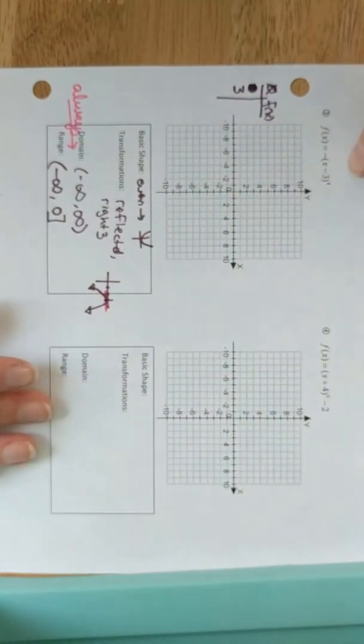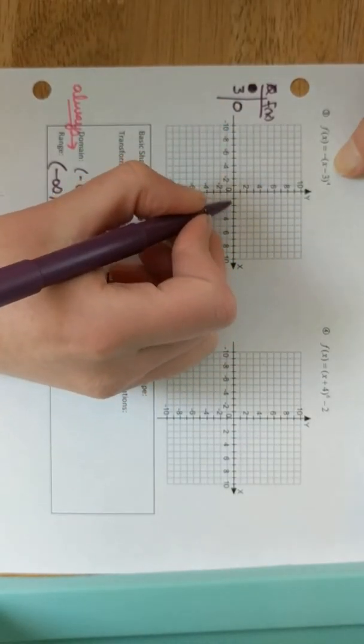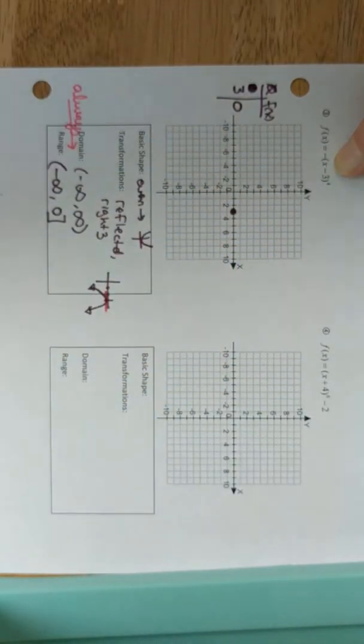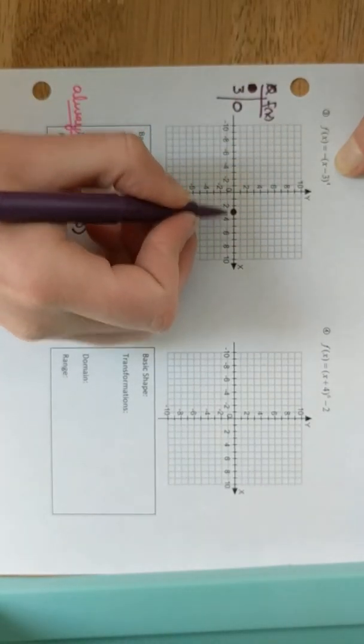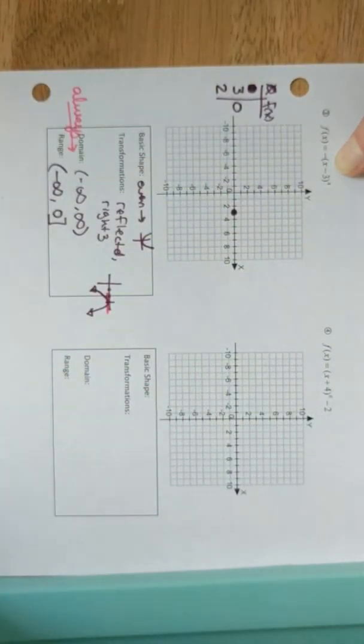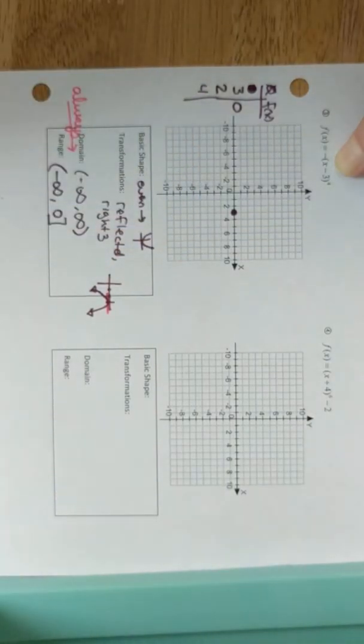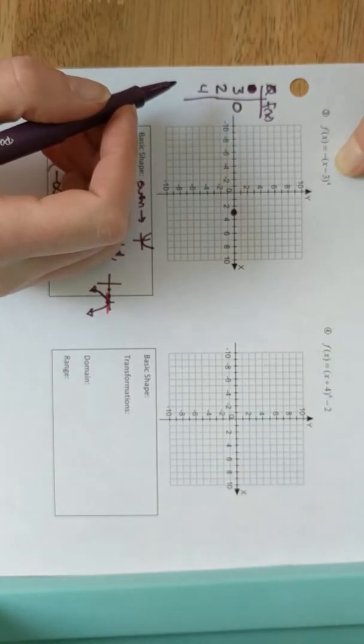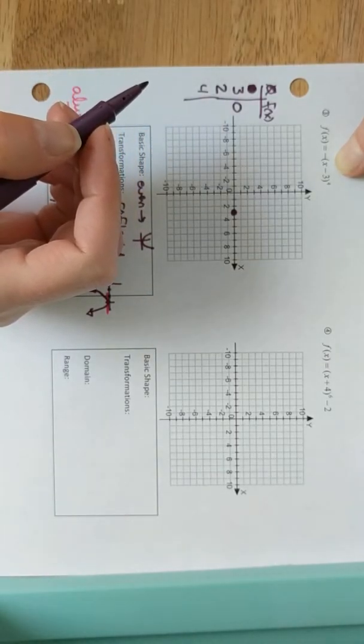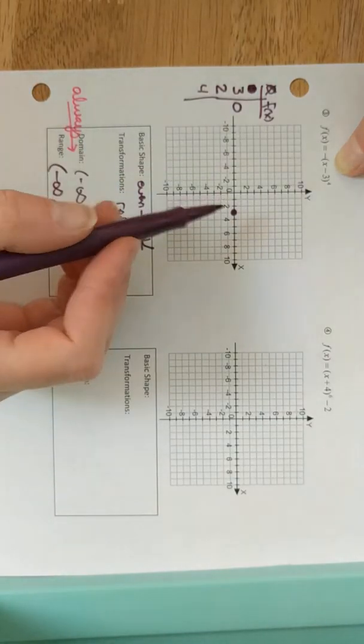Let's plug in a few ordered pairs and get a graph. Actually, before, I shouldn't actually choose zero first, I need to look at this. I get a right 3 shift, which means 3 should be the first x value I choose. So 3 into my function. 3 minus 3 is zero. 0 times negative 1 is still zero. So 3, 0. If I have a left or right shift, I want to start there. So the next point, I'm going to choose around there. I have 2 and 4.